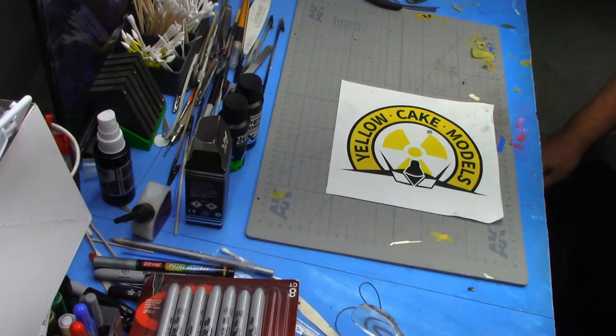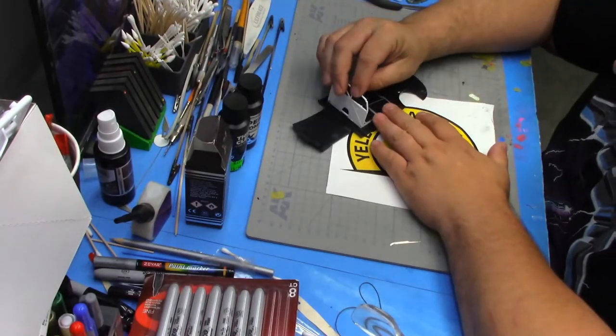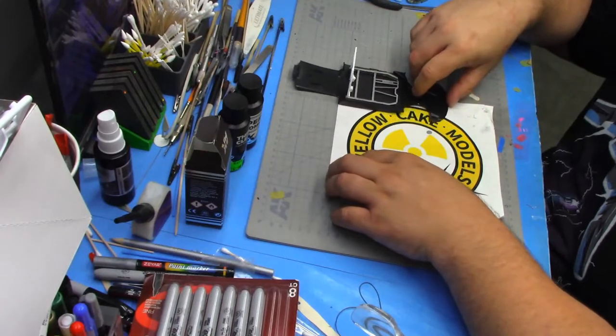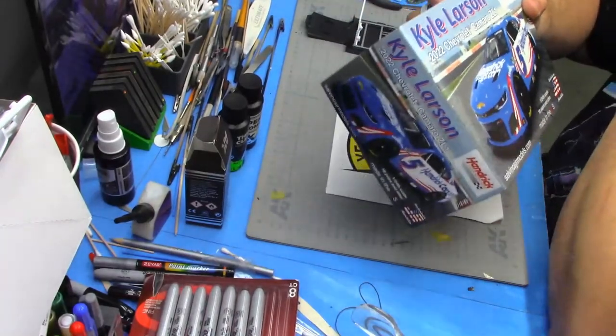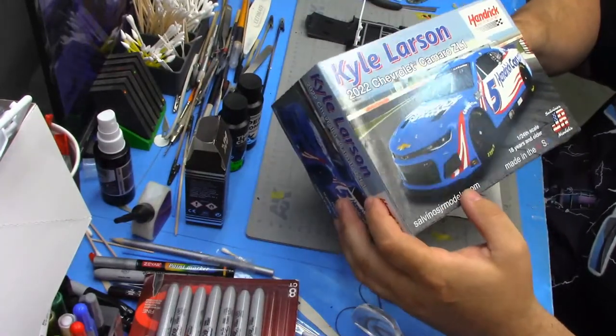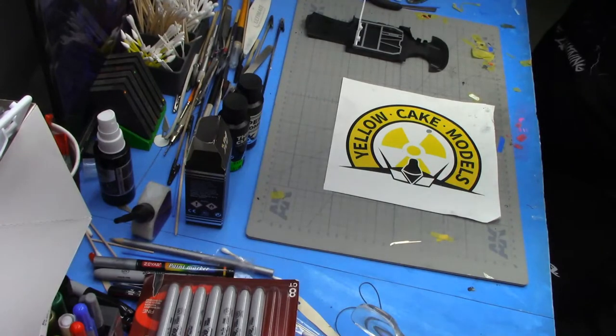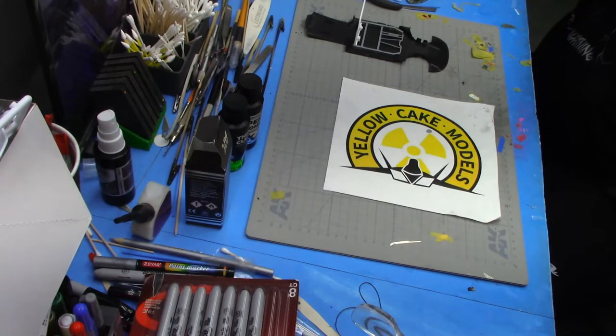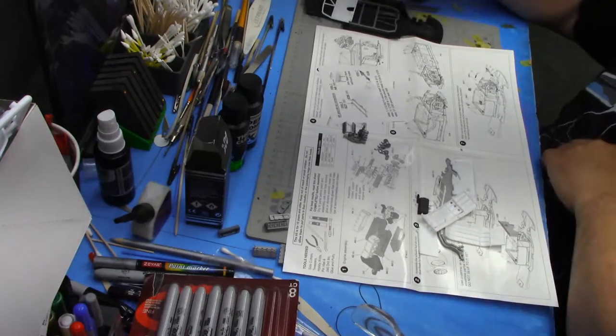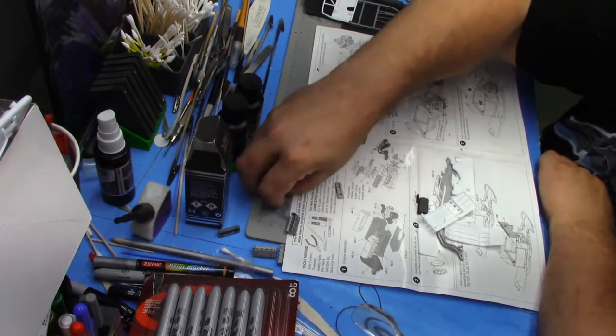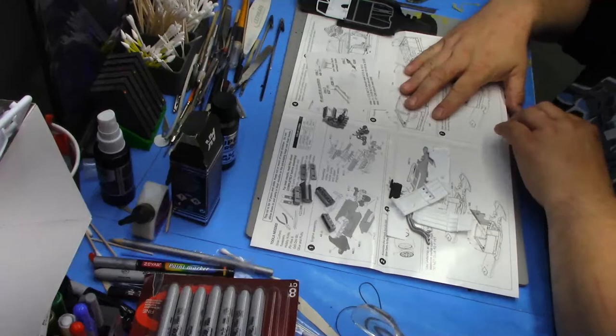And on to the current build. Here it is. I haven't really done anything with it yet. Controversial. The JR Salvinos Next Gen Kit. Lots of people are building this.